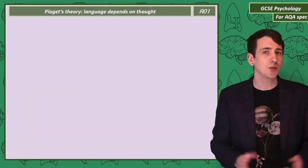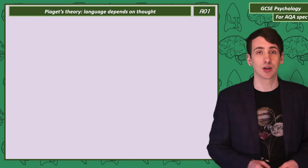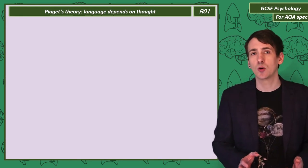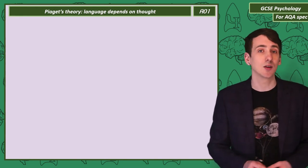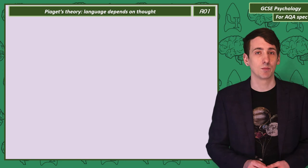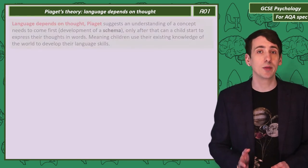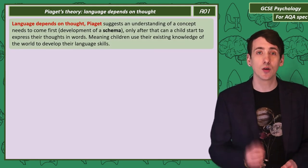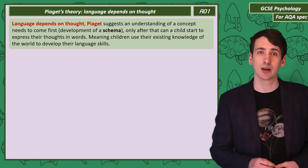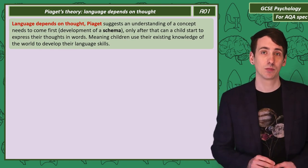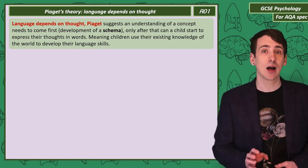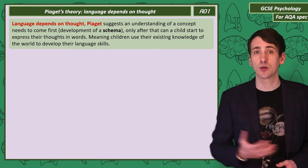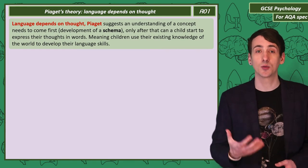To help us unpack this problem, let's start with Piaget, who might have had what seems at first to be the more common sense perspective. Piaget thinks that before being able to use a word, we need to develop a mental concept of what that thing is — a schema. When a child has developed their schema, they can then use that knowledge to express their thoughts with language.